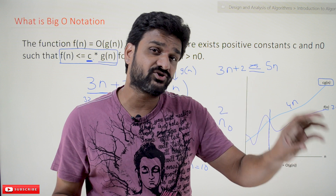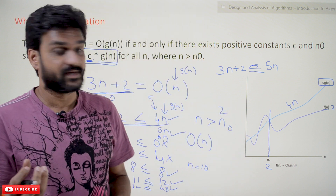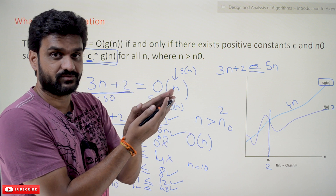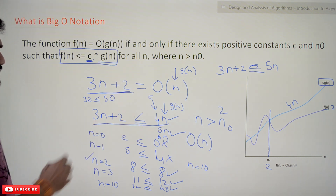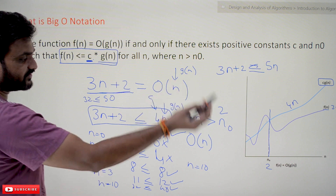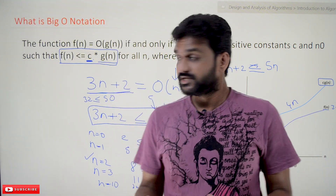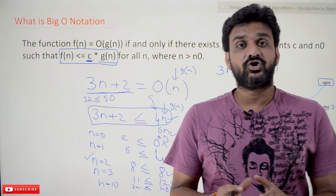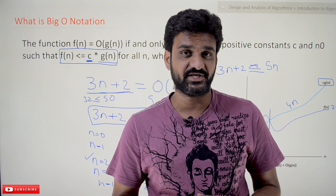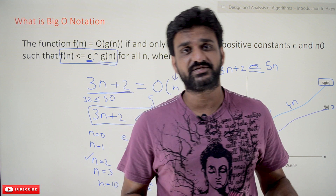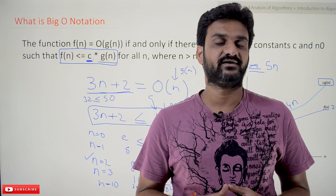In the next class we'll try to understand how Big O notation is used for algorithms. At this point you need to understand the mathematical idea: Big O is the tightest upper bound. Whenever we can prove that f(n) ≤ c·g(n) for all n greater than some n₀, then f(n) can be represented as Big O of g(n). Hope you got clarity on this concept. Thanks for watching. Please subscribe to our channel, press the bell icon for latest updates, post any doubts in the comments, and if this video was helpful, please like and share with your friends.